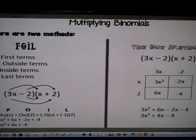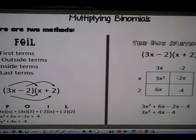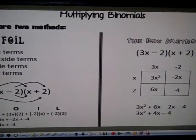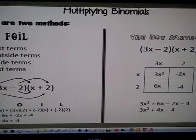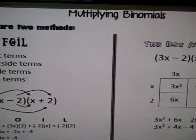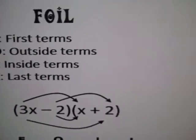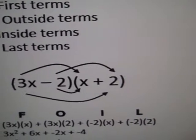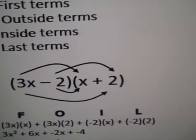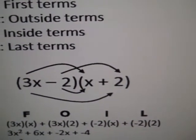After covering the unit on exponents we can go on to binomials and in particular multiplying binomials. Binomials are just two terms and when you're multiplying you treat it like a distribution problem. But think of it as doing distributing twice like double distribution.